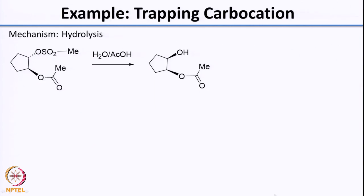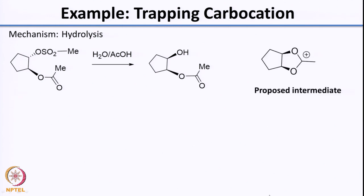Before I left last class, I had given you a question where I asked you to write the mechanism for this hydrolysis. You might be tempted to just write an SN2 replacement looking at the stereochemistry, which is why I also gave you a hint that the neighboring group has a role to play. What has been proposed as an intermediate for this reaction is this particular carbocation. Now that I have shown you what the intermediate is, I want you to write the mechanism for this reaction if you have not used this intermediate or if your mechanism does not have this intermediate.